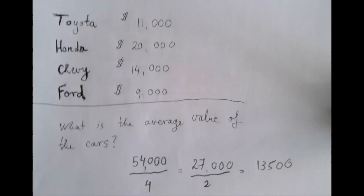That sort of makes sense. The average, for better or worse, is always between the greatest and the lowest number. The greatest number is 20,000, the lowest number is 9,000, so 13,500 is a reasonable answer for the average value.